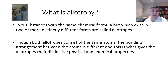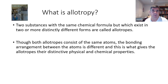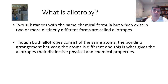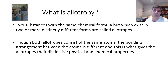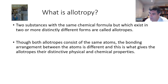Possibly the best example of this is carbon — it's the one we're probably most familiar with. Where there are substances which have the same chemical formula but which exist in two or more distinctly different structural forms, these are called allotropes.